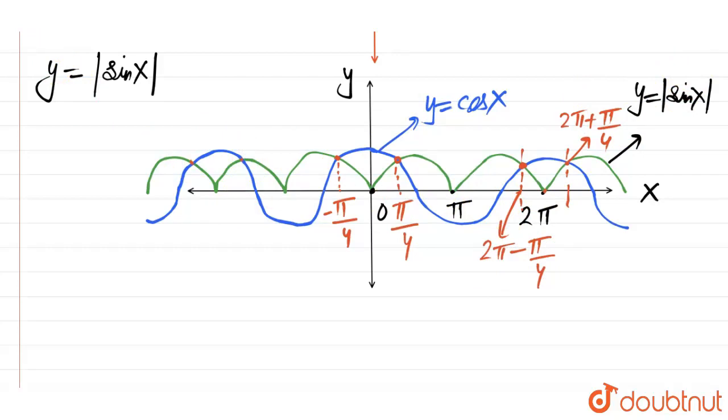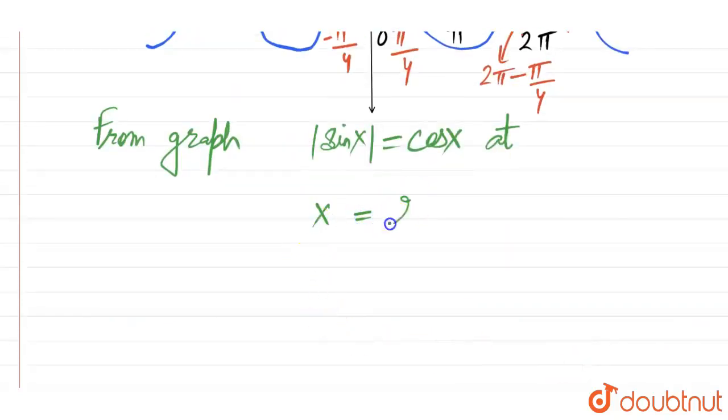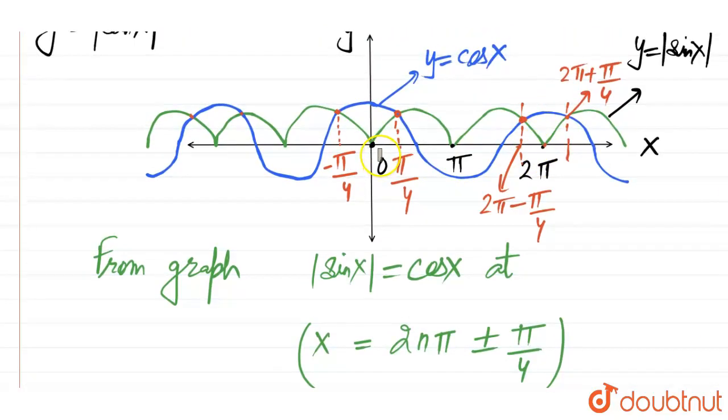So from the graph it is clear that from graph we can say that mod of sin x is equal to cos x at x equal to 2nπ plus minus π by 4. 2nπ means here the even multiples of π. We can see at 2π also. At 0 also. If we add or subtract π by 4. The two graphs matches at those points. So this is the final solution.